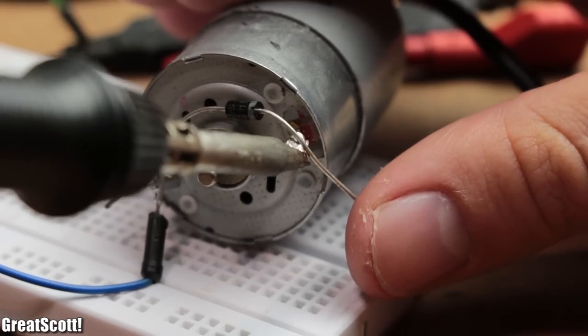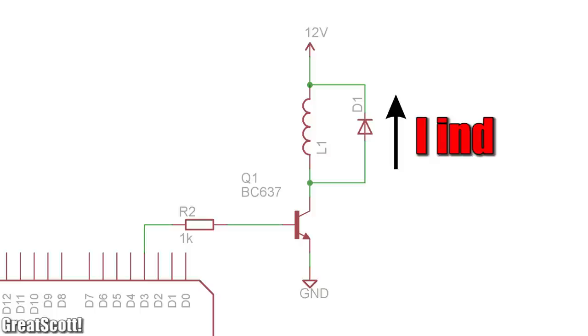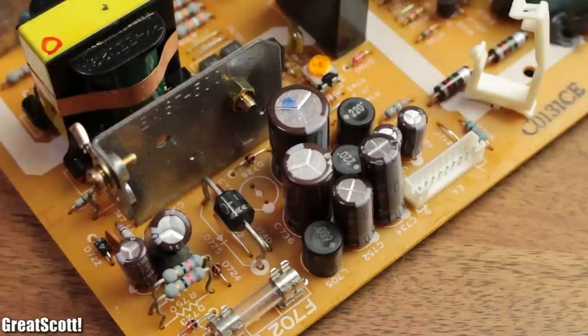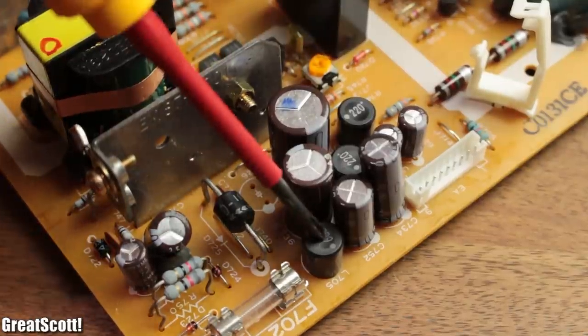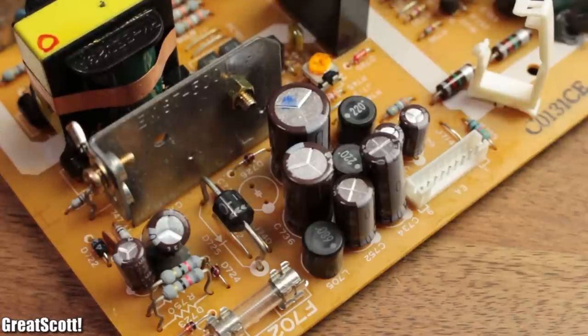So we use a flyback diode to protect our switch by offering the current a way to flow. Or we use a coil at the output of a step-down converter or switching power supply so that we have an energy storage which keeps our output voltage at a constant level.